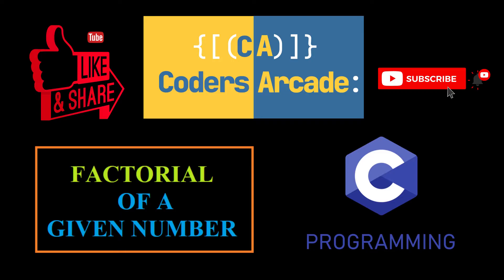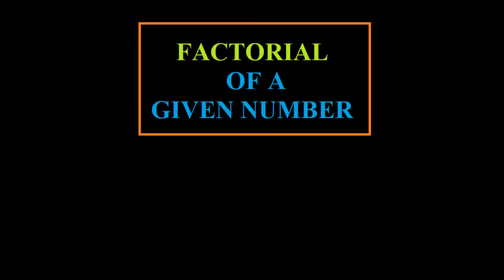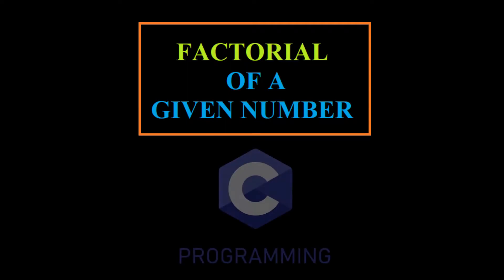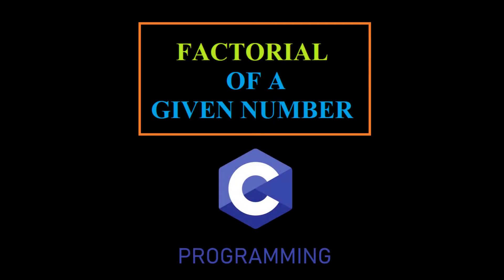So let's get started. Today's topic is finding the factorial of a given number using a C program. Let us go to the editor so that I can show you how to write a C program to calculate the factorial of a given number using recursion. After the execution, we will come back and see how the program execution occurs.